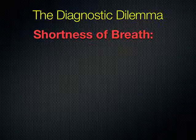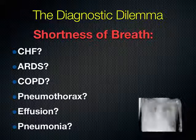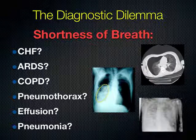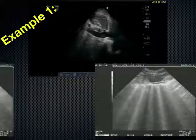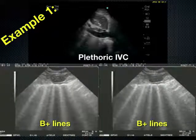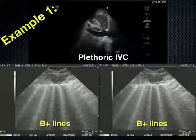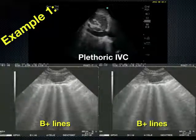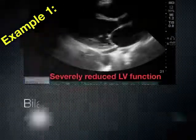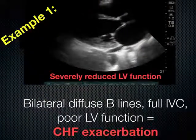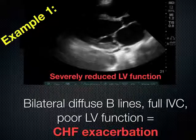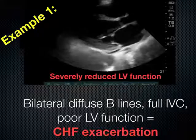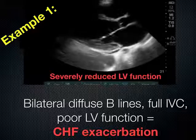Here is the diagnostic dilemma of shortness of breath. Do we have CHF, ARDS, COPD, or any number of things? In order to get a jump start on appropriate therapy, use your ultrasound. Example number one: a patient is acutely short of breath and you find an IVC that is plethoric with no significant respiratory variation, bilateral B-lines, and on the cardiac window the left ventricular function is severely reduced. The combination of bilateral diffuse B-lines, a full inferior vena cava, and poor LV function leads you to the diagnosis of a CHF exacerbation as the cause of respiratory distress.